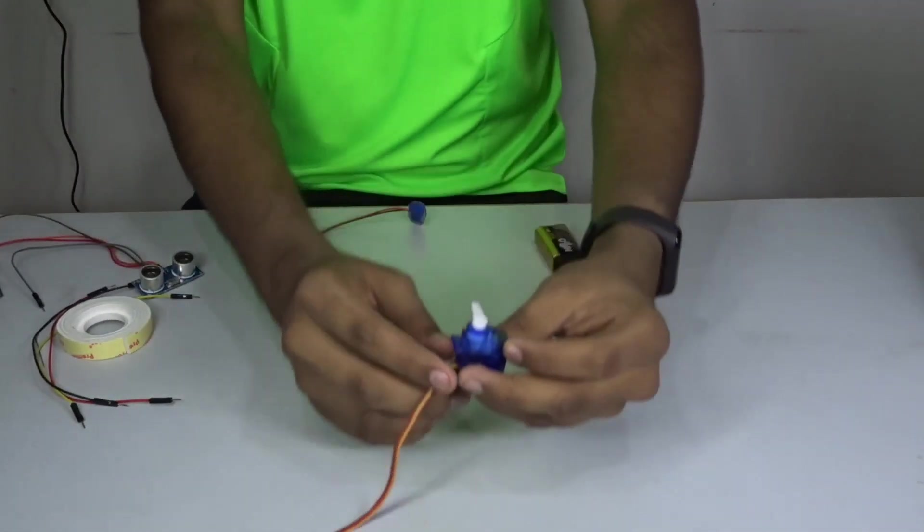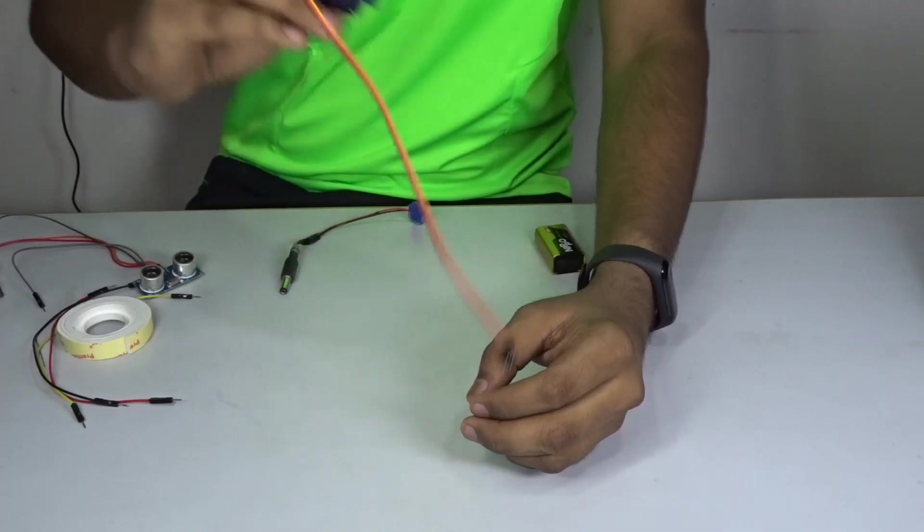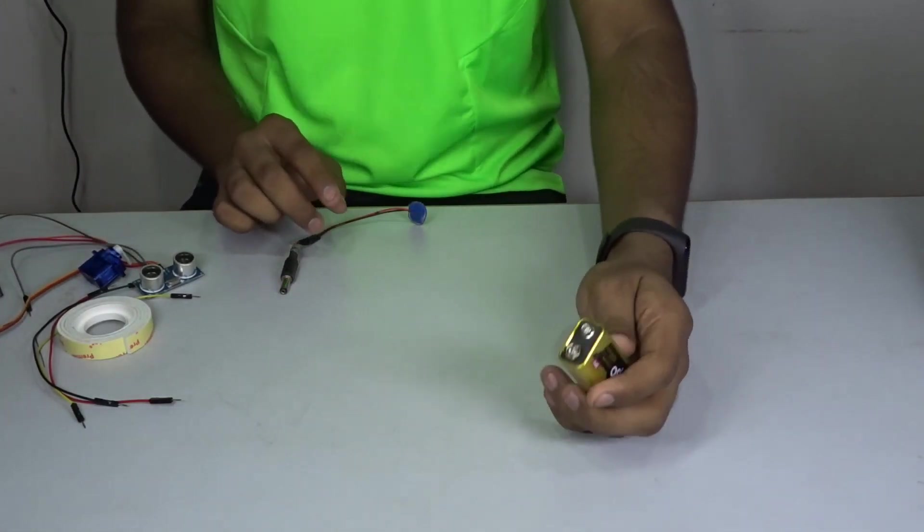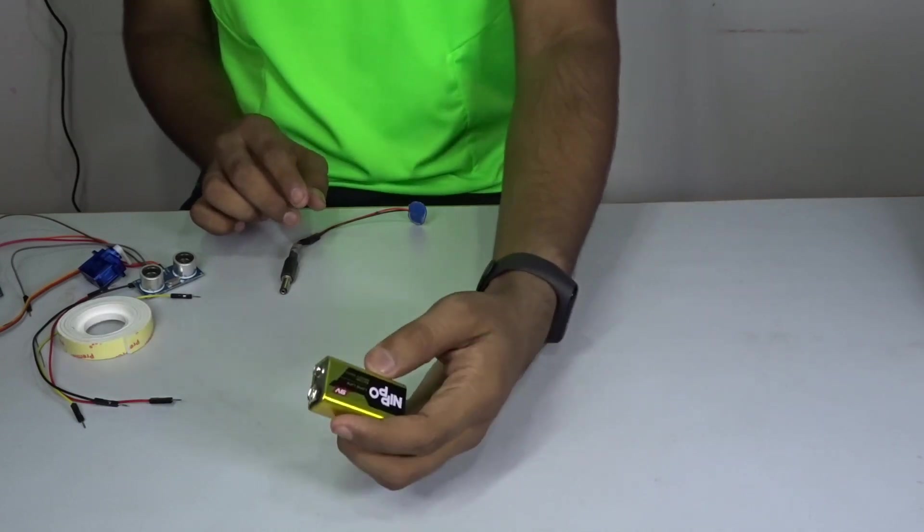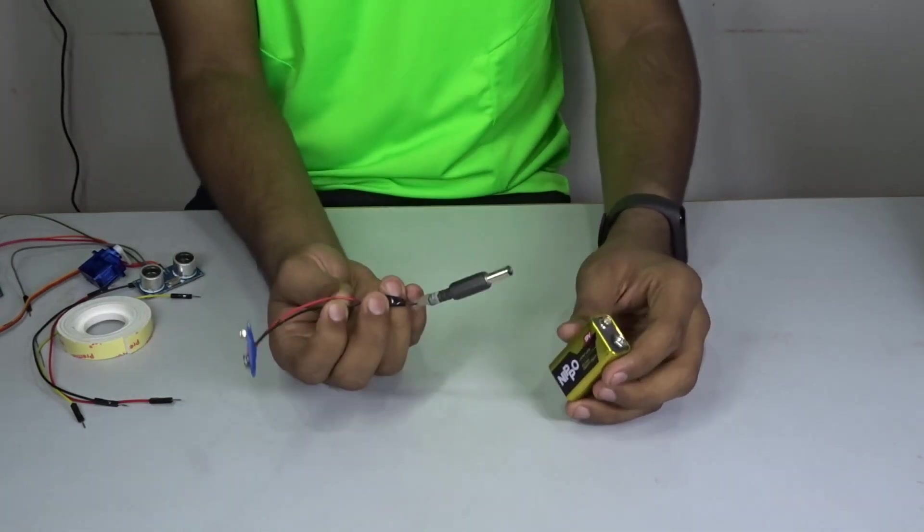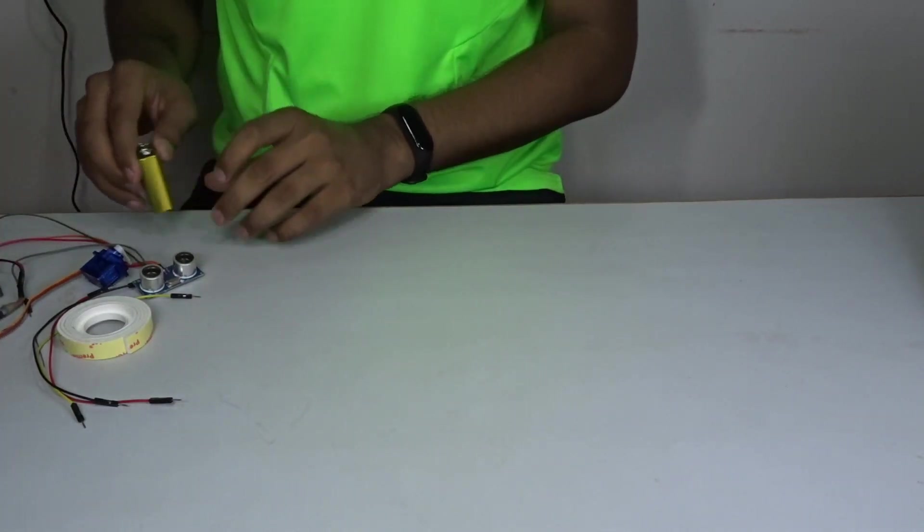Then up here is the 9 gram servo, it is a pretty common servo, you can get it pretty cheap at any hobby stores. Then to make it completely wireless from the computer, we are using a 9 volt battery with the connector. So let's start building the project.